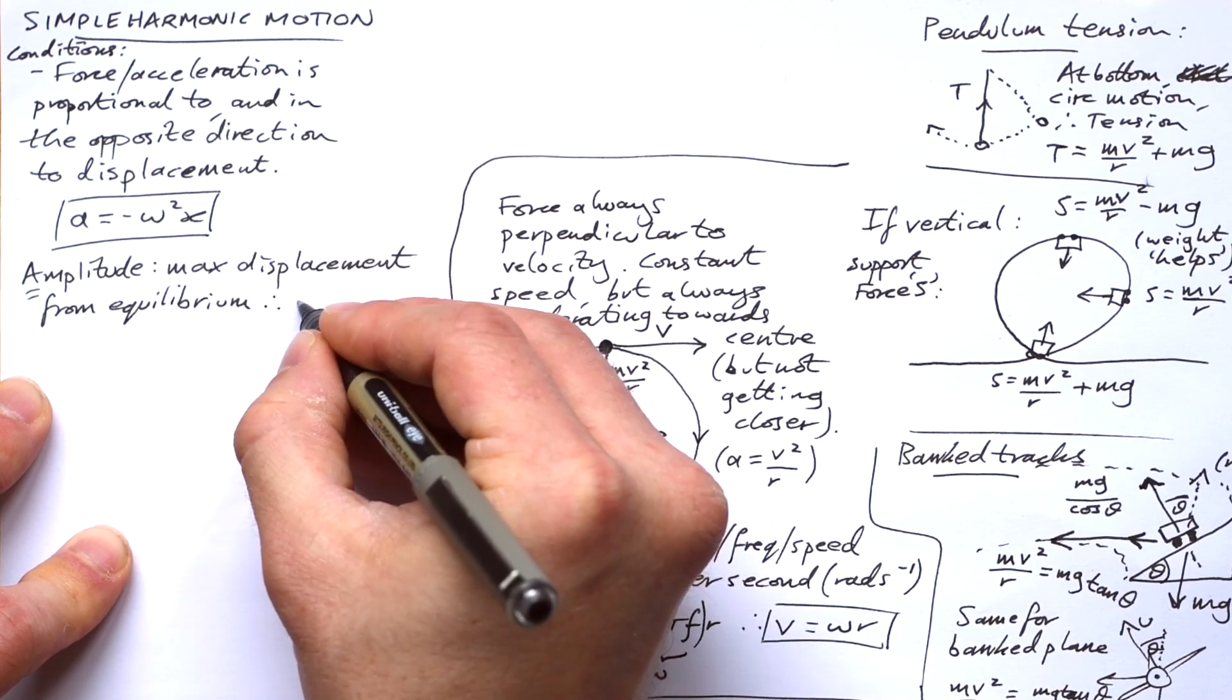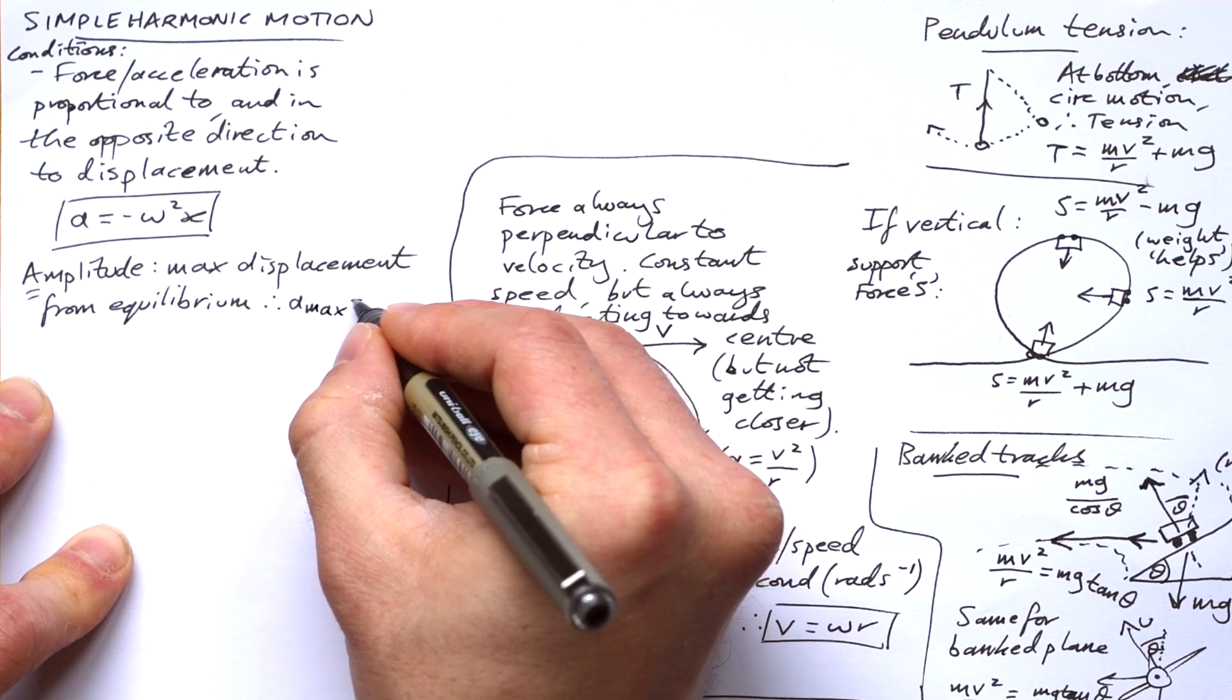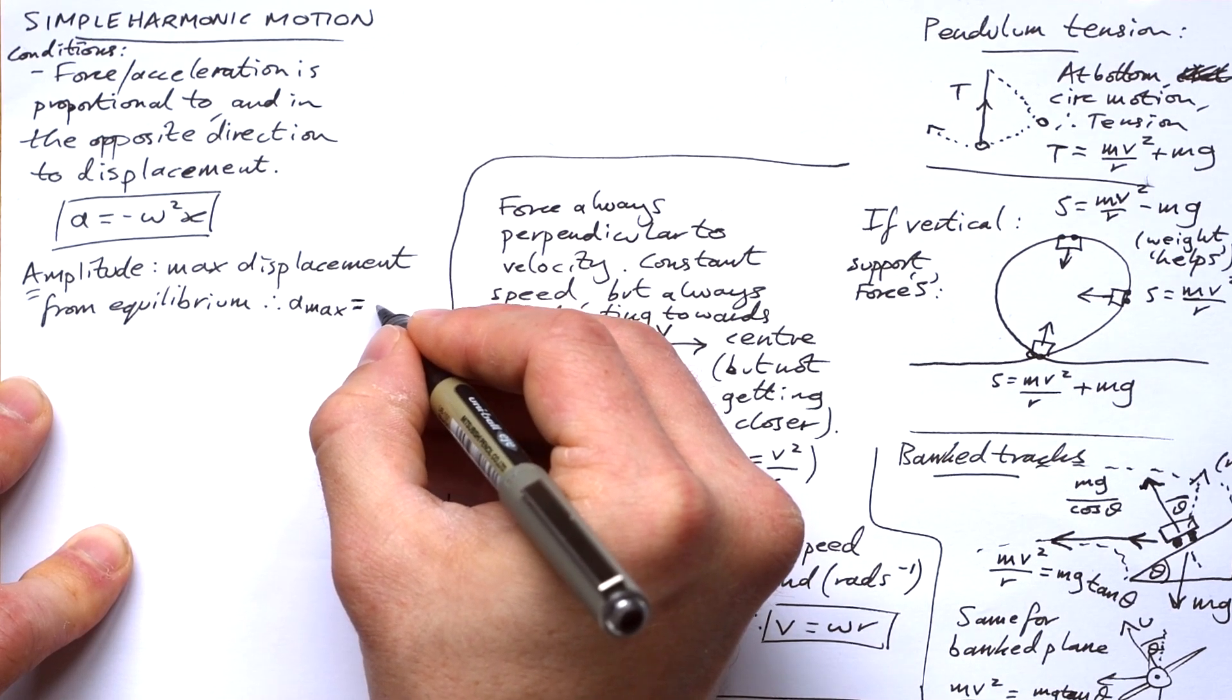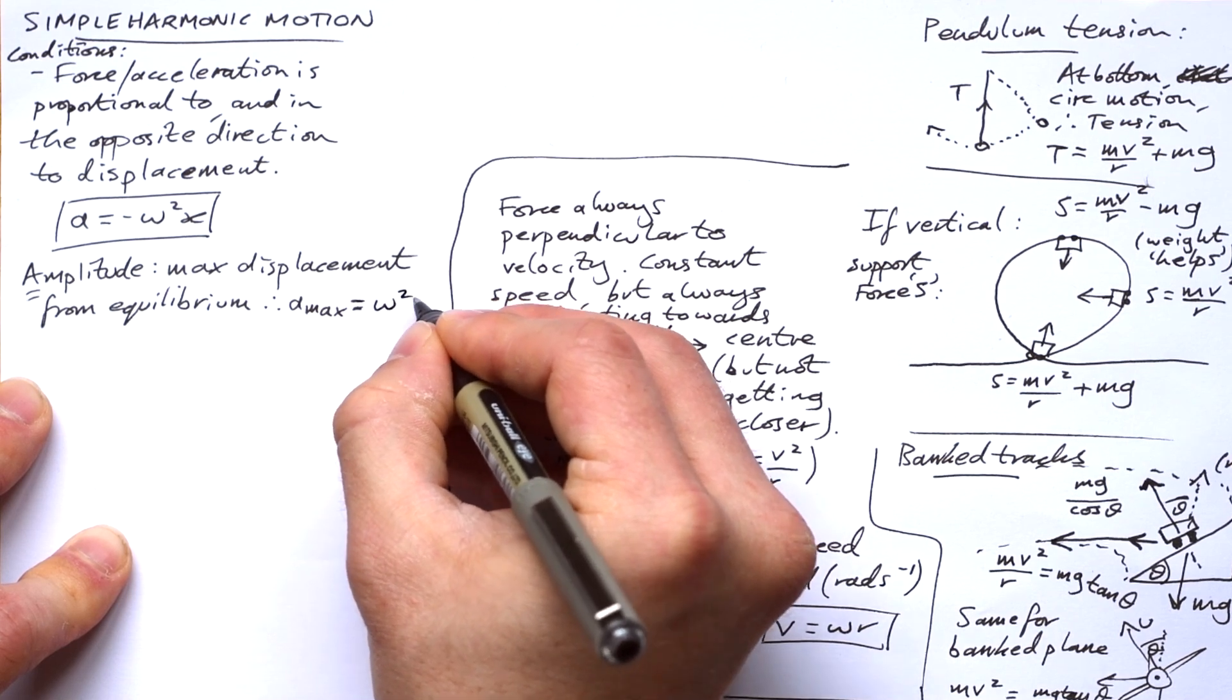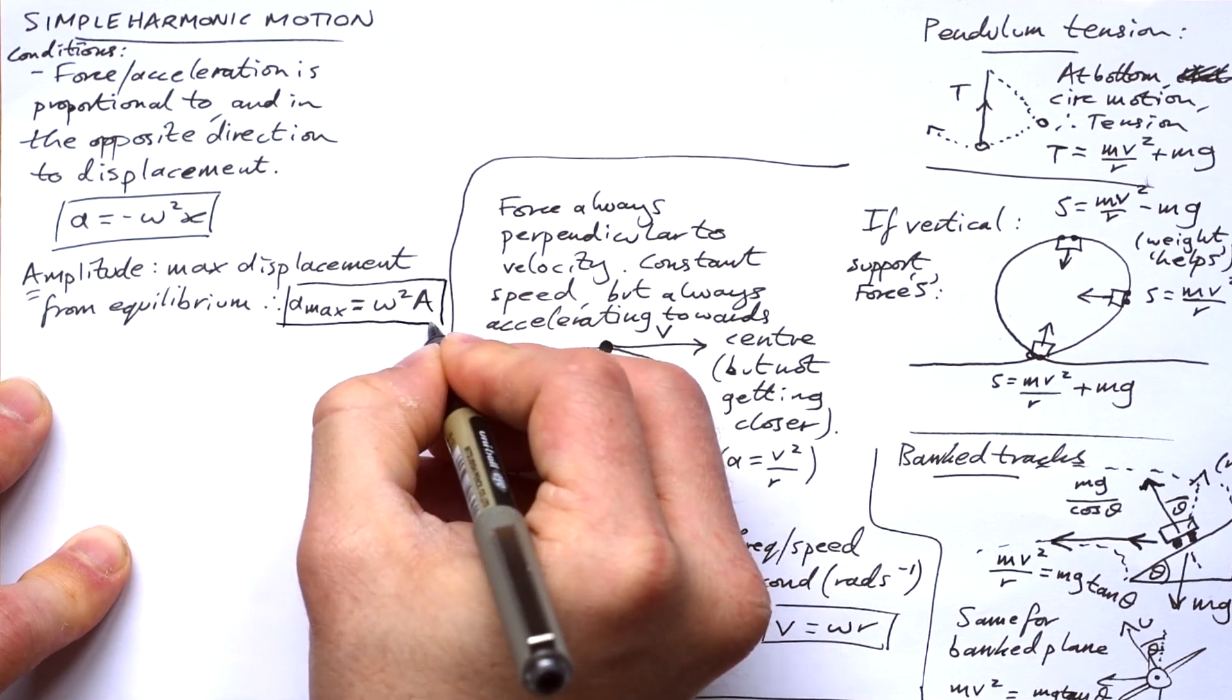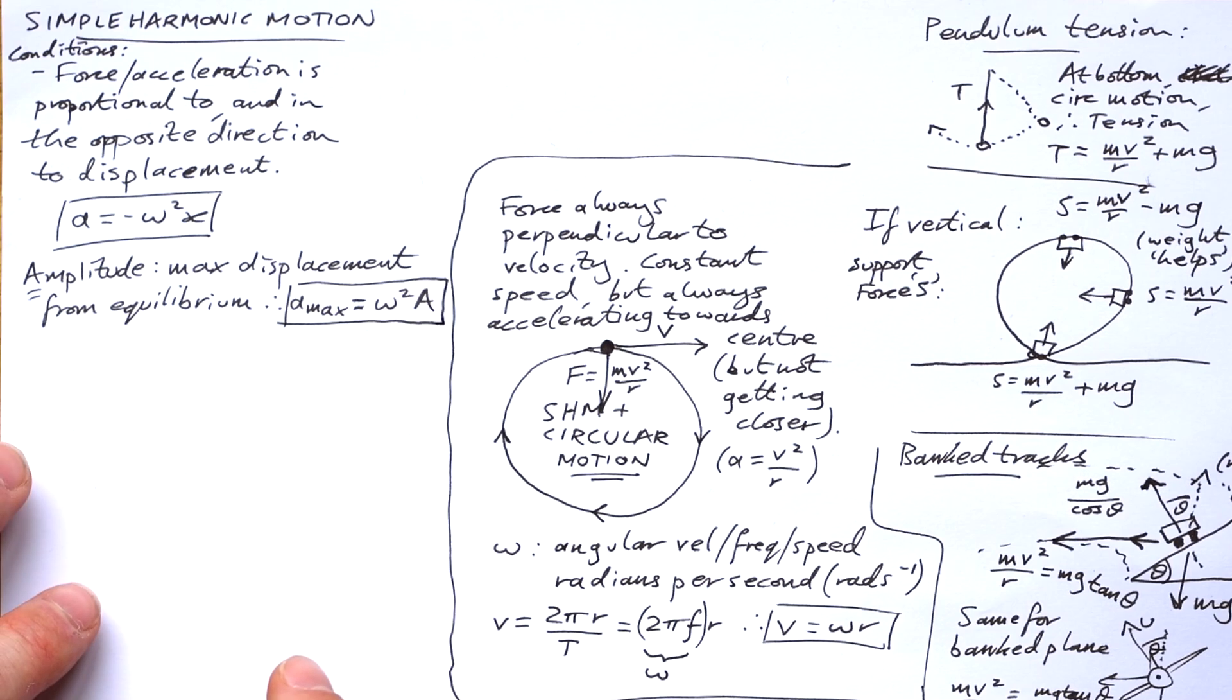So looking at our conditions at the top, then that means that the maximum acceleration is going to be at x equals A, so a max is equal to omega squared A. Yet we've missed out the minus because we're just concerned with what the maximum acceleration of a system is. It doesn't matter in which direction because it's going to be in both, isn't it?